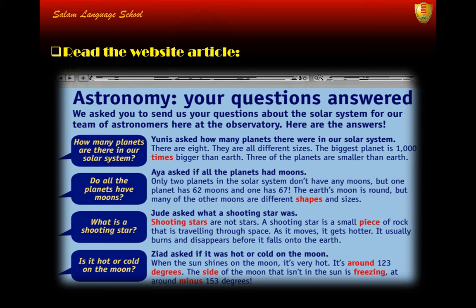The Earth's moon is round, but many of the other moons are different shapes and sizes. The third question: what is a shooting star? Judy asked what a shooting star was. Shooting stars are not stars — a shooting star is a small piece of rock that is traveling through space. As it moves, it gets hotter.